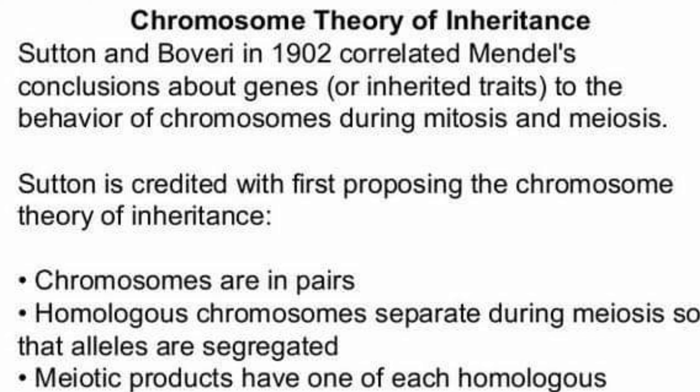Sutton and Boveri combined their work, which became known as the chromosomal theory of inheritance. They noted the behavior of chromosomes and stated that it was actually parallel to the behavior of genes — or 'factors,' as Mendel called them. They understood that chromosome behavior is just the same as that of genes or factors. At Mendel's time, genes were not known; he called them factors, and he failed to prove their physical existence.